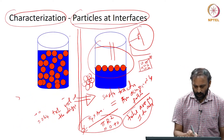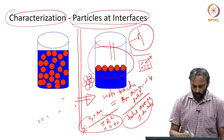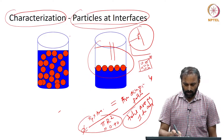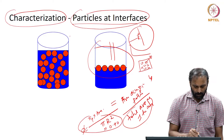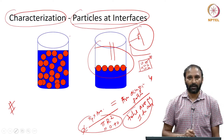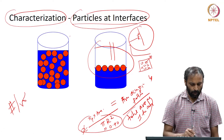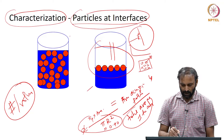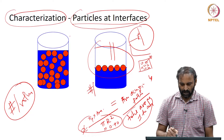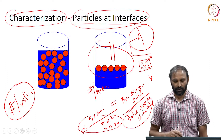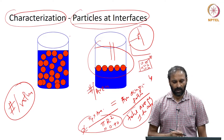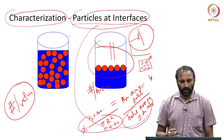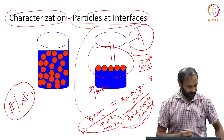Another parameter that one could use is, in the case of particles in the bulk, the number density of particles — that is, the number of particles per unit volume. Similarly, for particles at interfaces, one could talk about surface density, which is the number of particles at the interface divided by the area of the interface. These are some additional characterization parameters one has to consider when dealing with particles at interfaces.